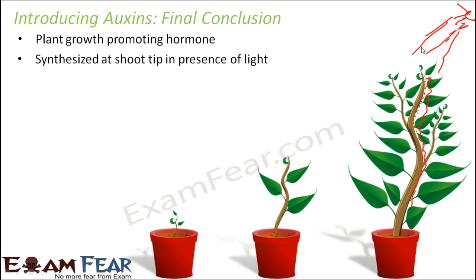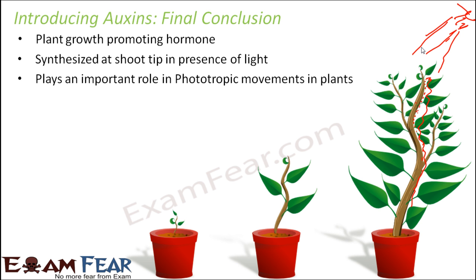You can try it out at home: take a pot with a small plant and keep it near your window with the window panes open. You will see that after a few days, since the sunlight comes from the window, the plant will tend to bend towards the window — towards the direction of sunlight. That's because when it receives sunlight at an angle, some part receives more sunlight, so more auxins get generated, concentration is higher on that side, growth is more, and as a result the bending takes place. So auxin plays a very important role in phototropic movements in plants.